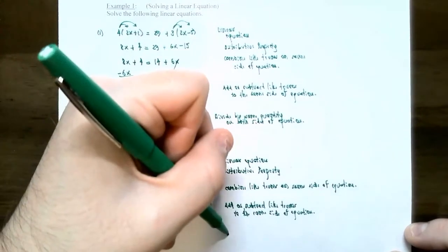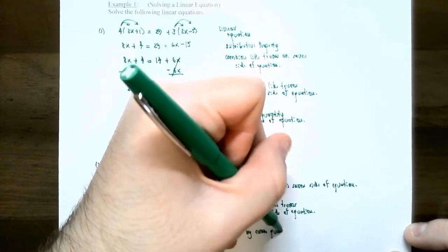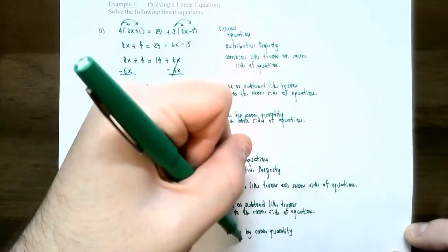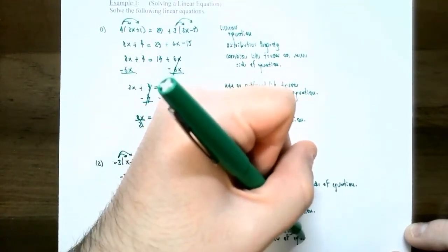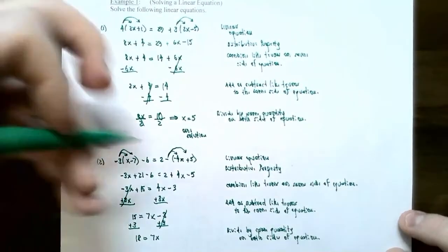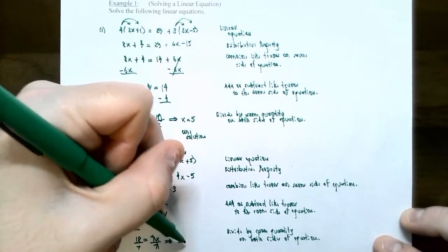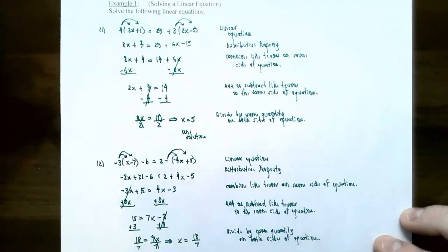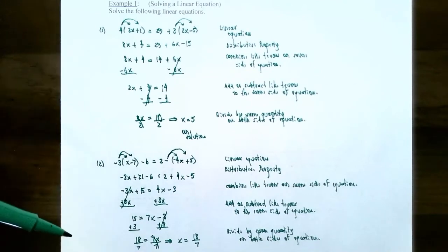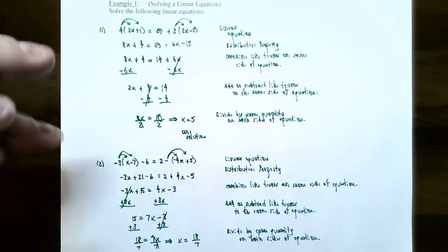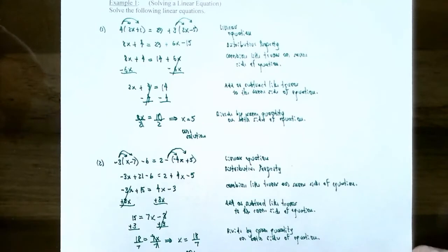Divide both sides by 7 to isolate x, so x equals 18 sevenths. Do not round your answer — if you put this into a calculator you'll get an approximation. 18 sevenths is the exact answer, and if you plug 18 sevenths in for each x, the left side and right side of the equation will be equal.